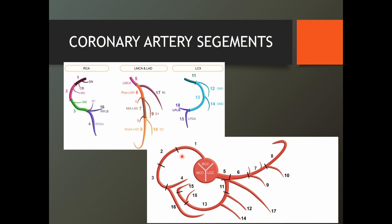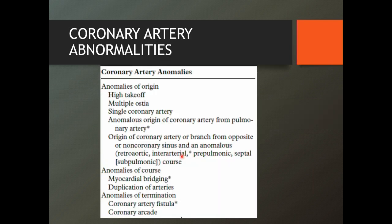You have to remember this segmental numbering system because when you describe in your report, if you want to be specific and more impressive, you can say this particular branch at this segment is occluded — it gives a good impression to your referring cardiologist. I have been saying for 35 years: we are clinicians. Radiology is a clinical branch. If you look at the WHO classification of medicine, you will find radiology under clinical branch. You should examine patients, go to the ward, do all those things, because you are the only person who knows every single branch.